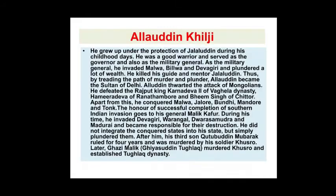Alauddin Khilji was the most famous king of the Khilji Dynasty. He grew up under the protection of Jalaluddin during his childhood days. He was a good warrior and served as a governor and military general. He invaded Malwa, Bhilsa, and Devagiri and plundered a lot of wealth — plundered means looted. He then killed his guide and mentor Jalaluddin, the founder of the Khilji Dynasty, by resorting to murder and plunder, and became the Sultan of Delhi.